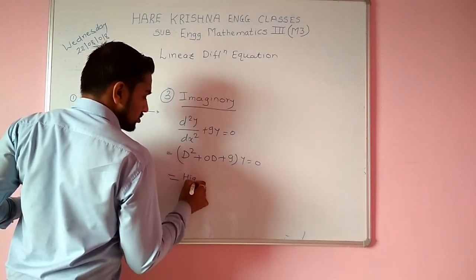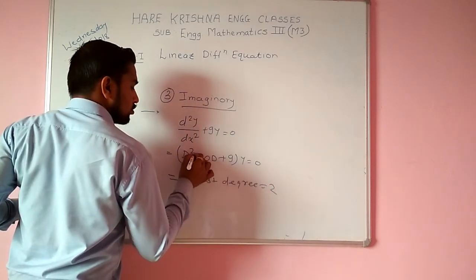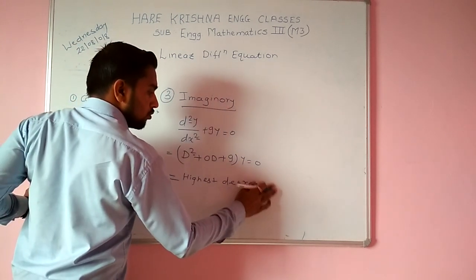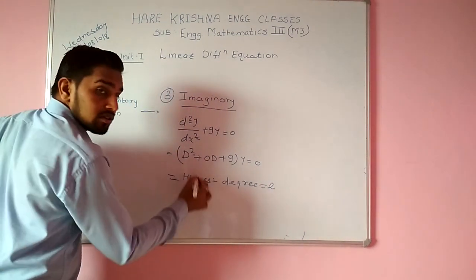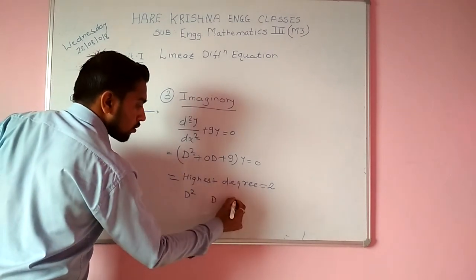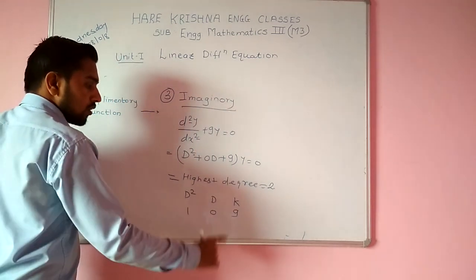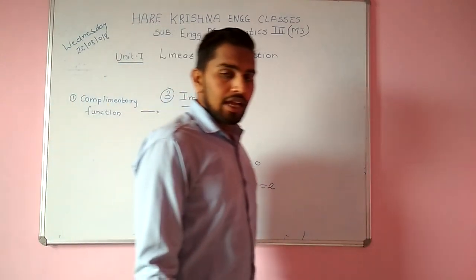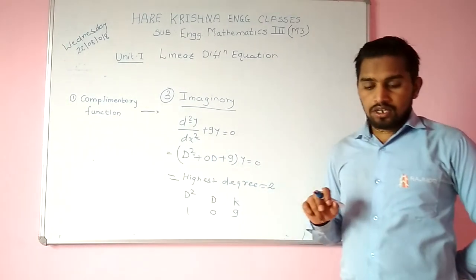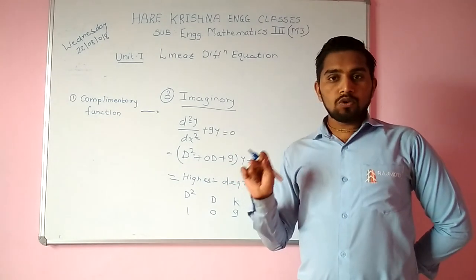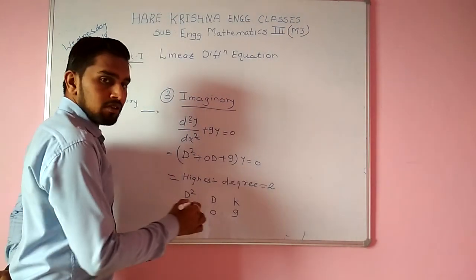Highest degree is 2. Now put D² = 1, D coefficient = 0, and constant = 9 into your calculator. Press the mode button three times to get the equation solver, then put in the values 1, 0, and 9.